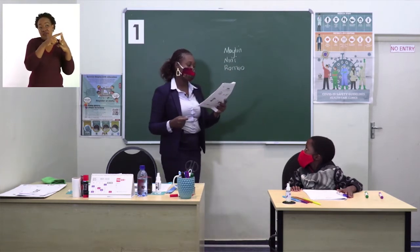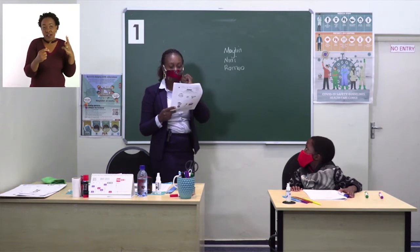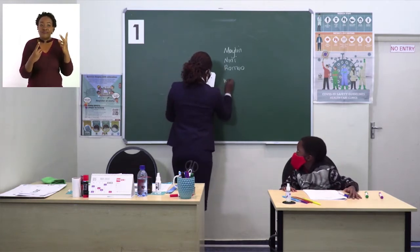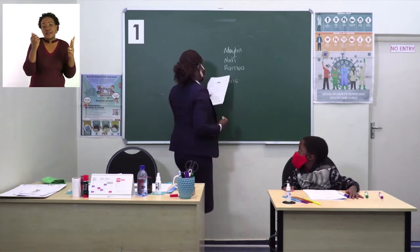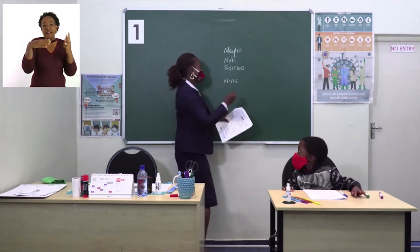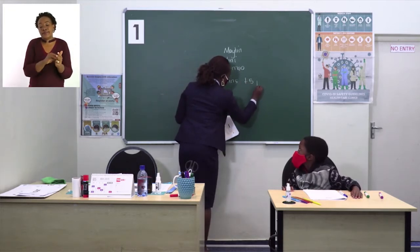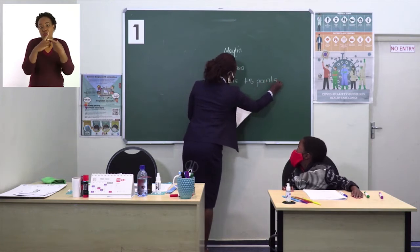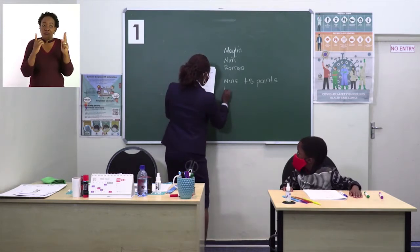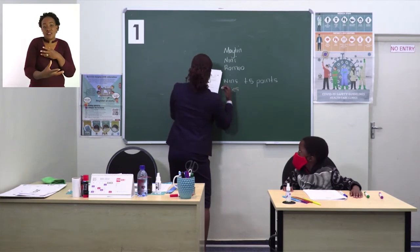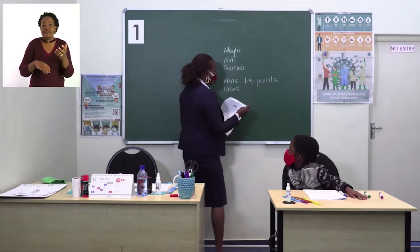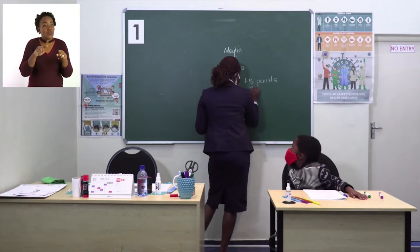Marilyn, Nini, and Romeo are keeping score of the game they are playing. When a player wins a game, that player gets five points — which means plus five points. If a player loses a game, the player has three points taken away, which means minus three points.